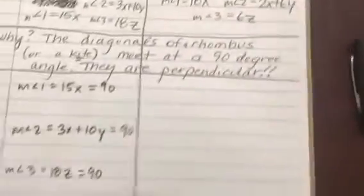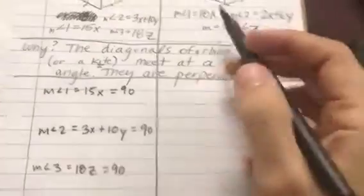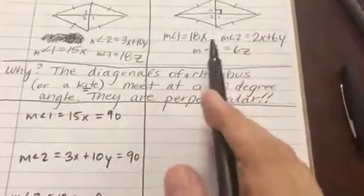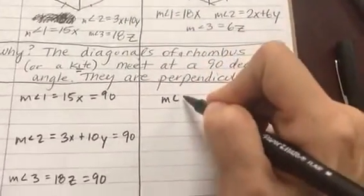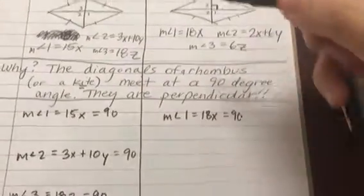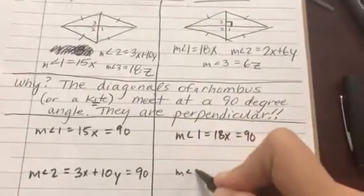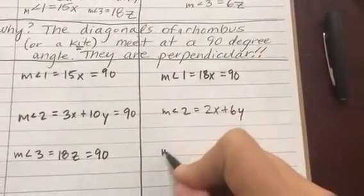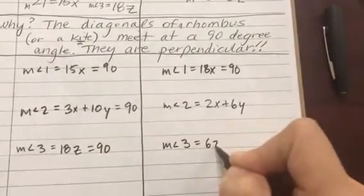So once you know how to set up the problem, it's a very straightforward algebra question. Taking a look at form A, the setup is pretty much identical. So again, the measure of angle 1 here was 18x, which we know is equal to 90. The measure of angle 2 was 2x plus 6y, and the measure of angle 3 was 6z.